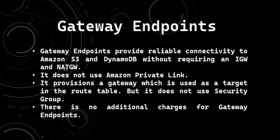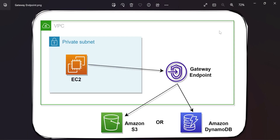There are no additional charges for gateway endpoints. This is our VPC, and within this VPC one private subnet is there. Within this private subnet, the EC2 instance is there, but the gateway endpoint is not inside the private subnet — it is outside the private subnet but inside the VPC. When the EC2 instance tries to connect to Amazon S3 or Amazon DynamoDB using the private network, it will connect to the gateway endpoint first, and with the help of the gateway endpoint, it will be able to connect to Amazon S3 and Amazon DynamoDB using a private network.